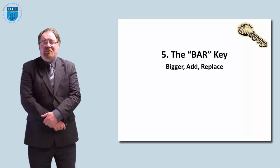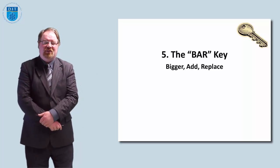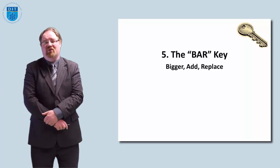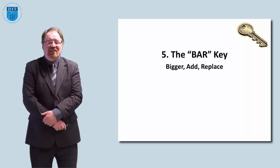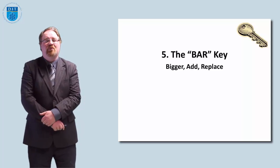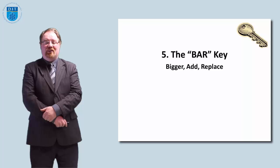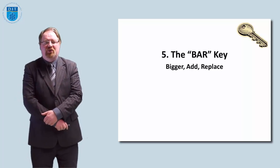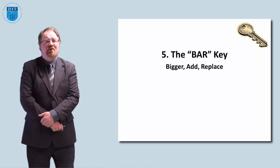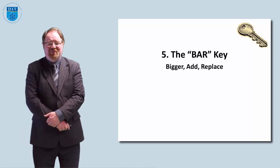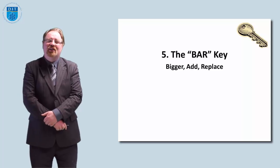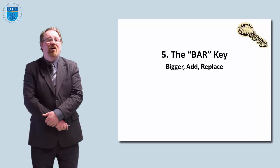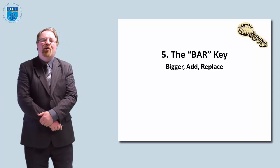The next key, which is key number five, is called the BAR key — B-A-R — which stands for bigger, add, or replace. It's somewhat like SCAMPER. Bigger means what would happen if we made a part of the thing bigger? What if we made all the bus seats bigger, or all the bus wheels bigger? Add is what can we add to a bus to improve it — like adding a bar. And replace asks: is there something in the bus we can replace? What if we replaced all the seats with bean bags or hammocks? How would that change things?